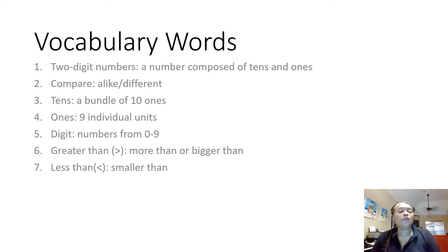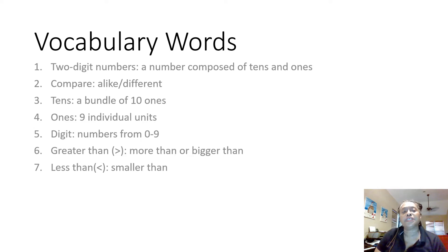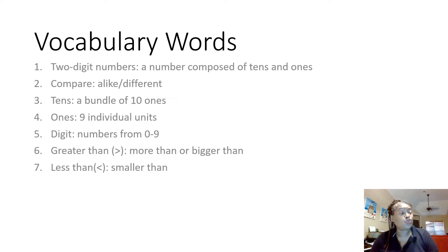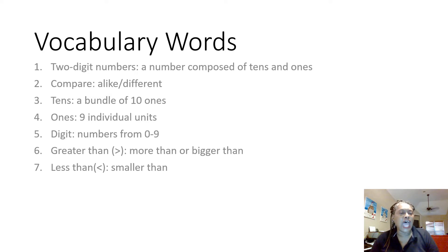In order to be successful with this, we need to review the vocabulary words we need to define. Number one: a two-digit number is a number composed of tens and ones. Compare is telling how something is alike. Tens — a bundle of ten ones makes one ten. Ones are individual units.